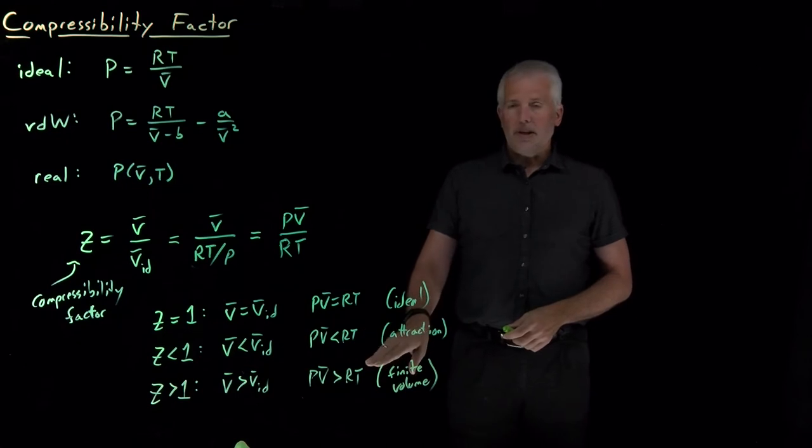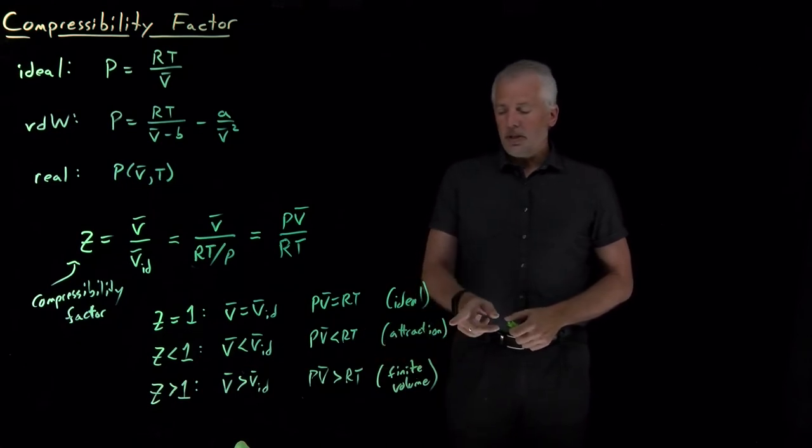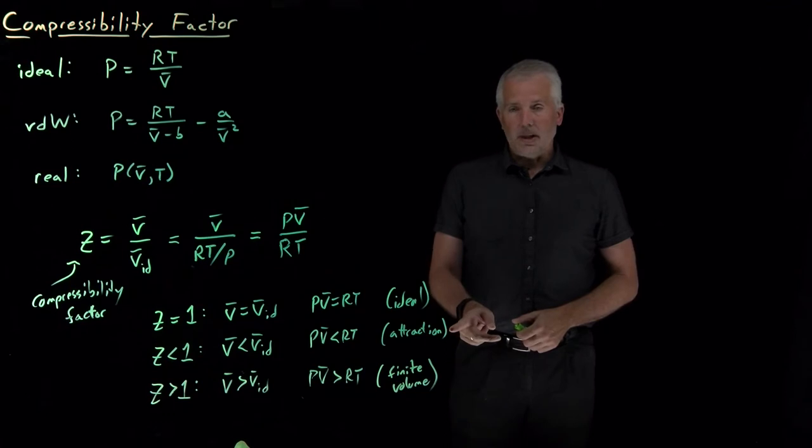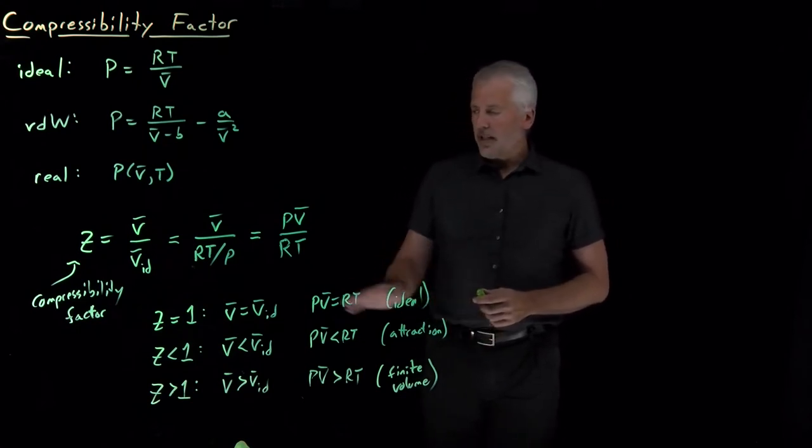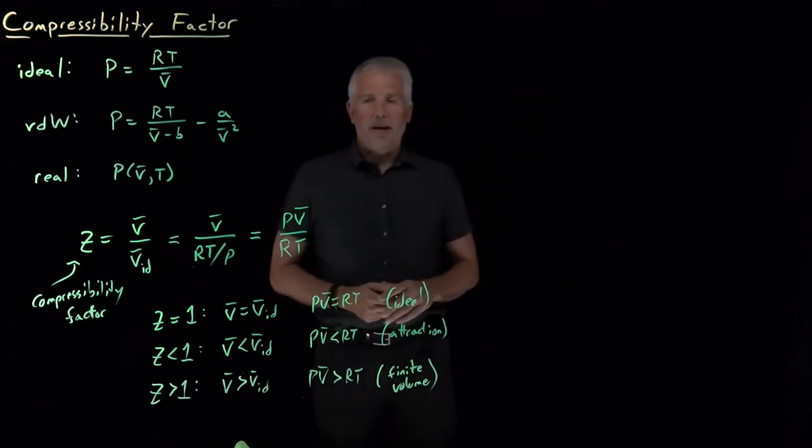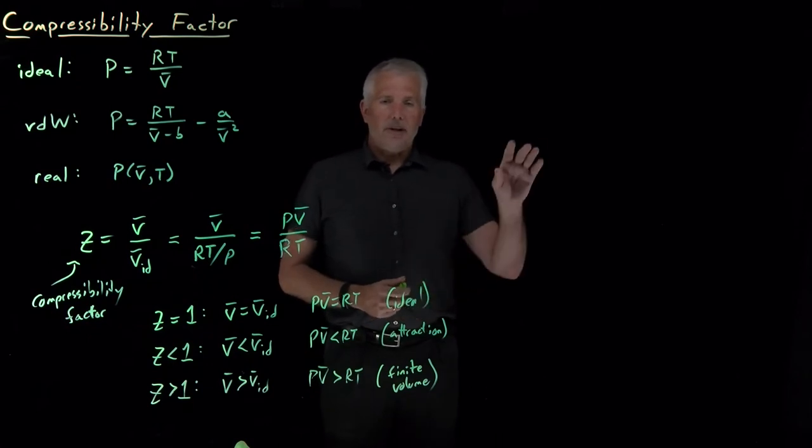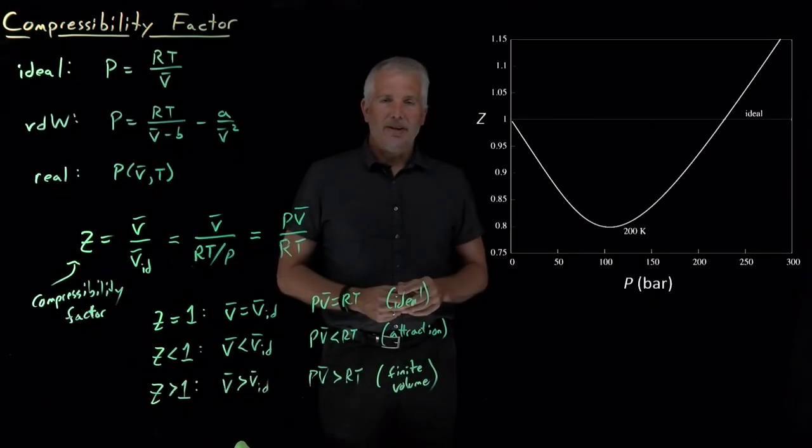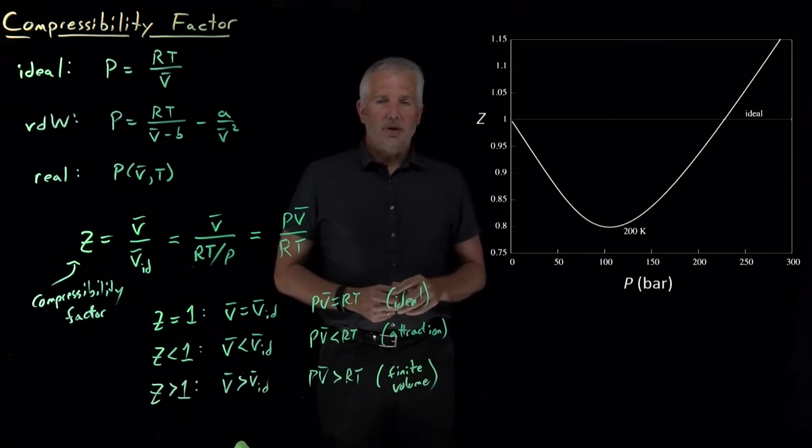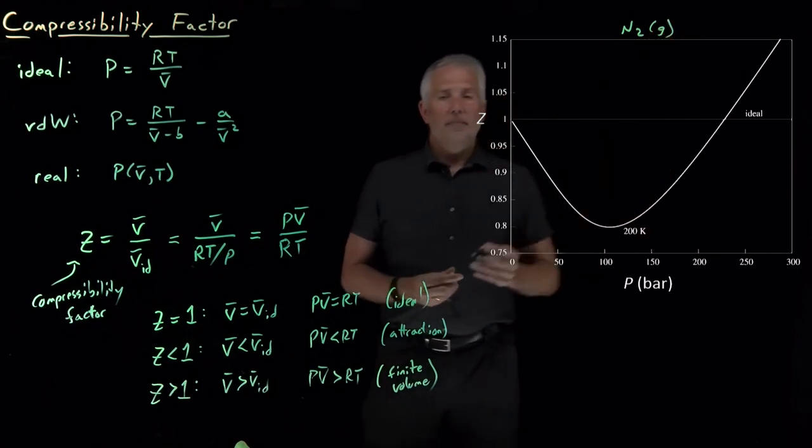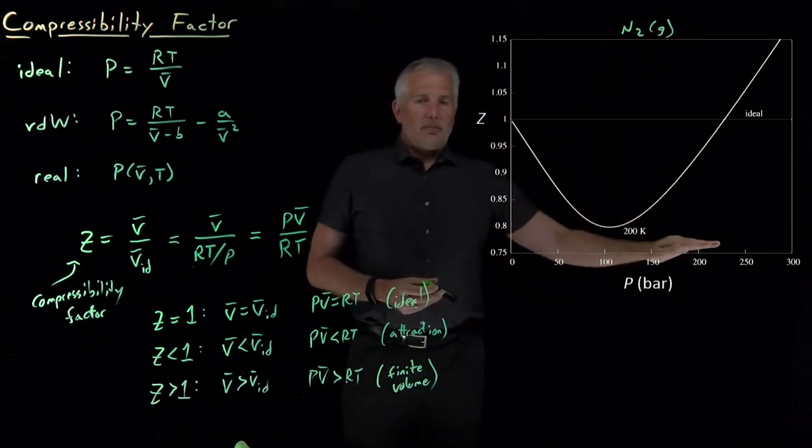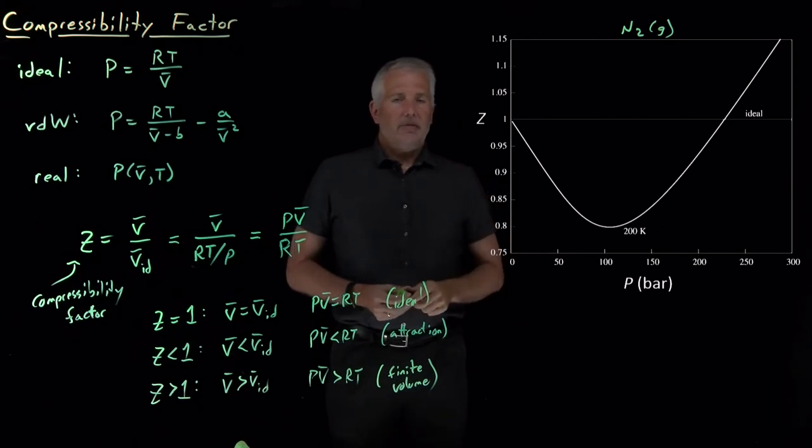The compressibility factor is useful for predicting or measuring whether intermolecular attractions or finite volumes are dominating the deviation from ideality. We can see that more explicitly with a graph. This is real data for nitrogen at various different pressures measuring the compressibility factor Z at a particular temperature of 200 kelvin.